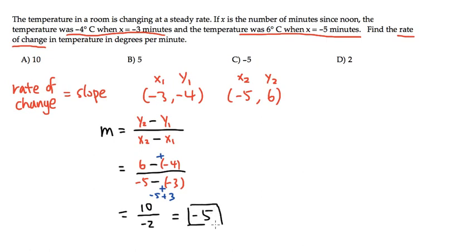And as you can see, this right here is the slope, and the unit for this is degrees per minute. So let me write this down: -5 degrees per minute. But as you can see already, the answer is choice C.